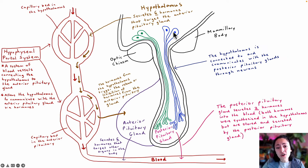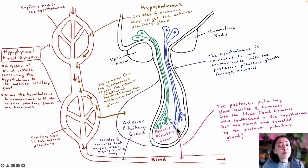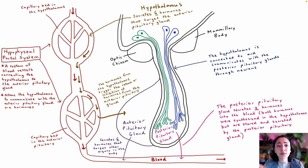Both of those hormones were actually synthesized in the hypothalamus but are stored and secreted by the posterior pituitary gland. Those hormones are produced in the cell bodies of these neurons and travel down the axons where they're stored in the axon terminals. The hypothalamus can then send a nerve signal down these axons to trigger the posterior pituitary gland to secrete its hormones into the blood.